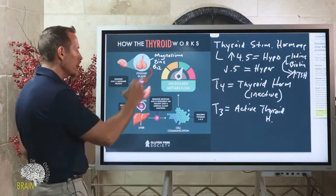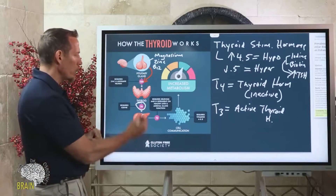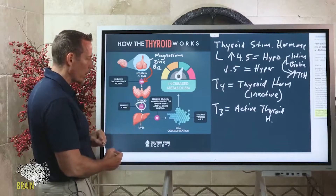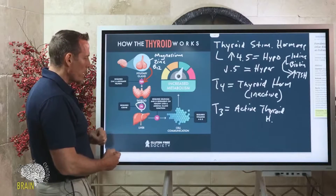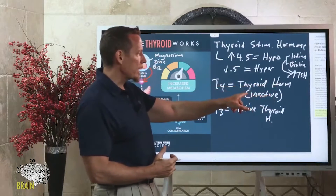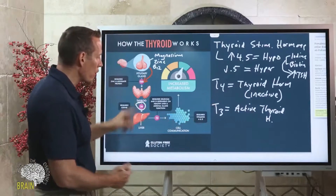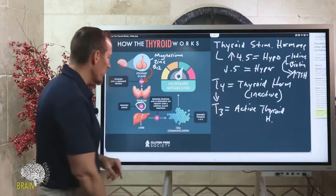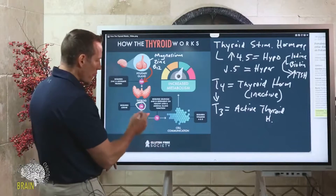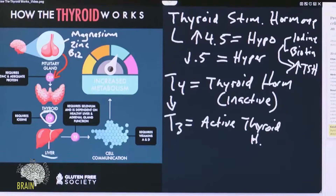Once you're capable of producing TSH, it will stimulate the thyroid gland to produce T4. T4 is thyroid hormone and it's inactive, so we have to convert T4 into T3 — this is called conversion.